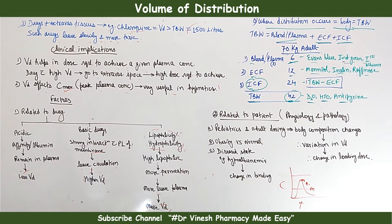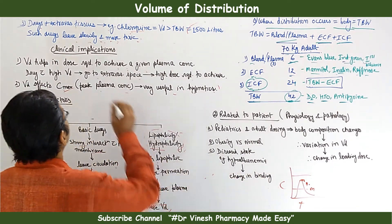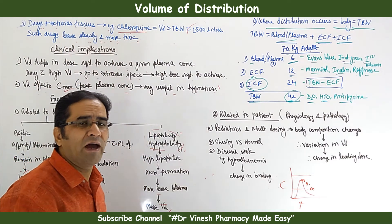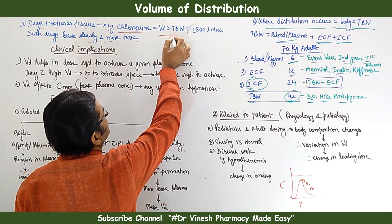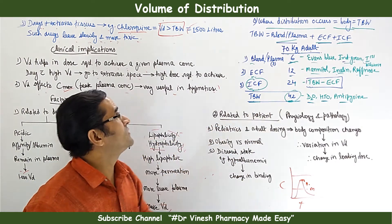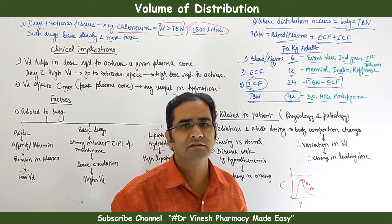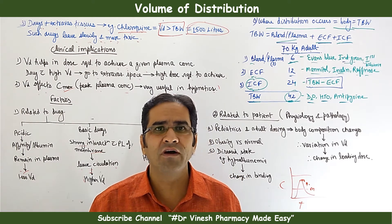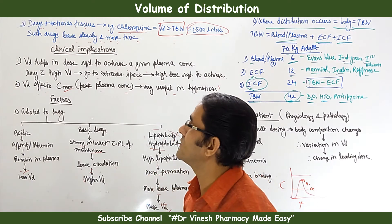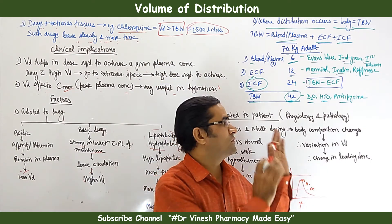Drugs that bind to extravascular tissues — for example, chloroquine — have a Vd greater than total body water, i.e., greater than 42 liters. Chloroquine has a Vd of around 1500 liters. Such drugs leave the body very slowly and are more toxic in nature compared to drugs that do not distribute extensively.